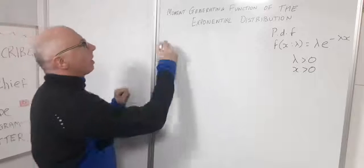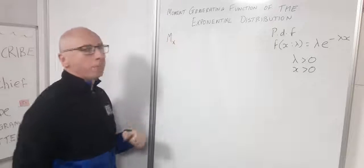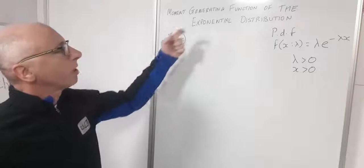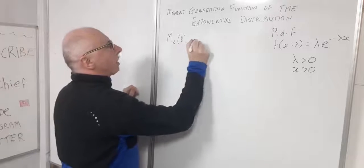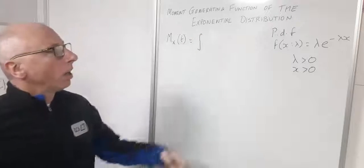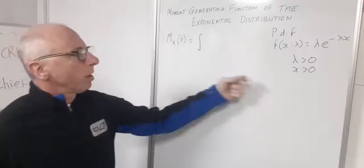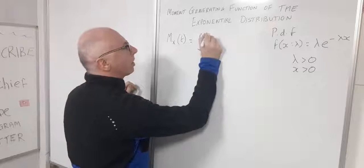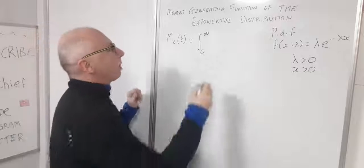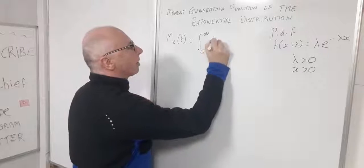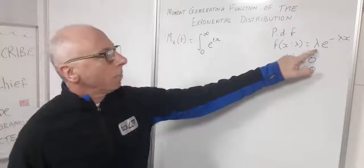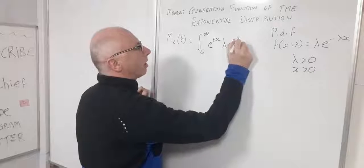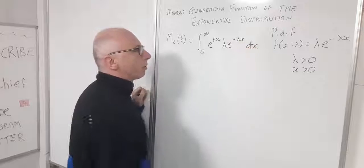The moment generating function, written as M_X(t), uses t as its parameter. For the exponential distribution, it is calculated as the integral from zero to infinity of e^(tx) times the PDF λe^(−λx), integrated with respect to x.